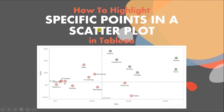In today's session, we will see how to highlight specific points in a scatter plot in Tableau. Scatter plots are used to visualize two measures in a single chart by placing one measure in the column shelf and another measure in the row shelf.